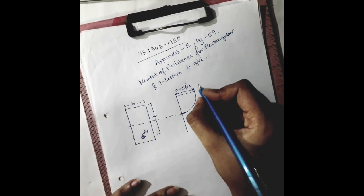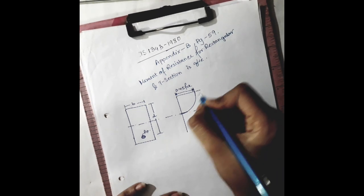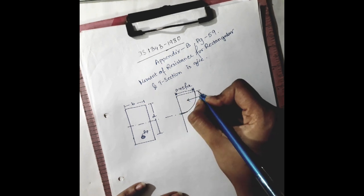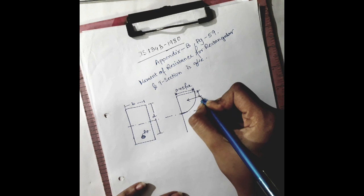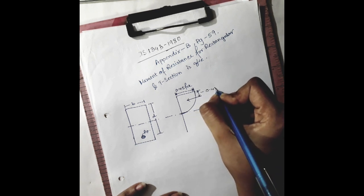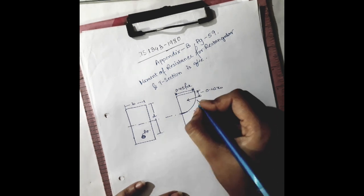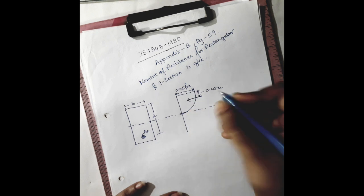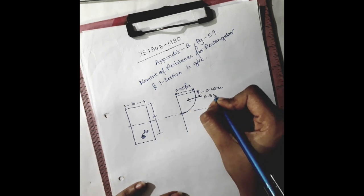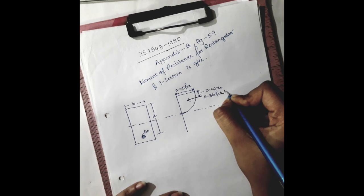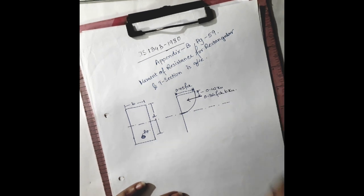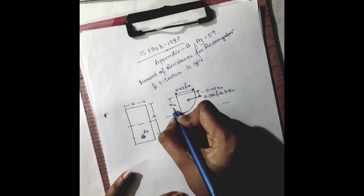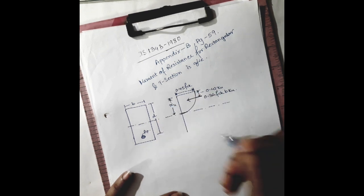The stress will be 0.45 fck, and the length from the upper fiber is 0.42 xu, where xu is the depth of neutral axis.